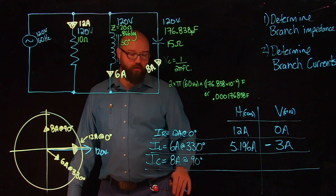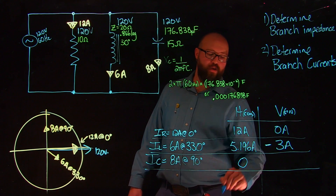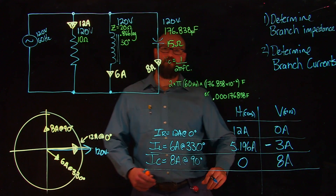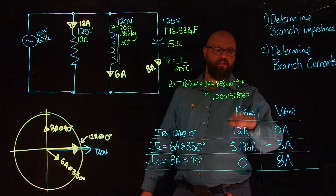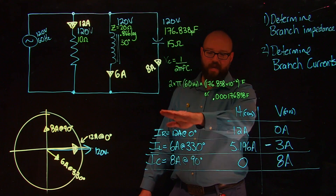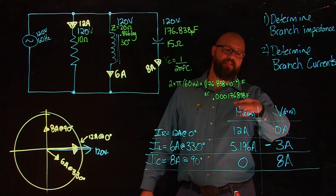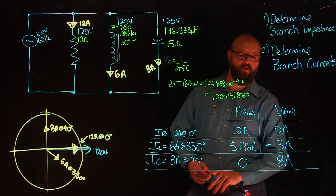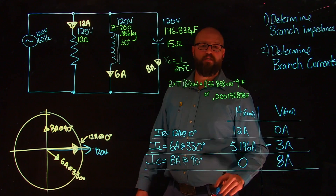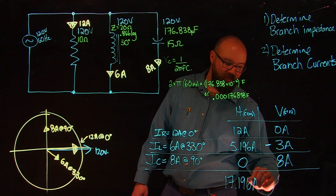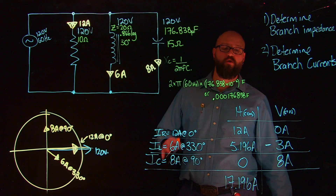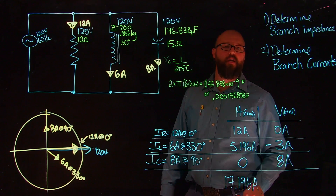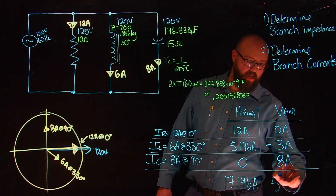For the capacitor: 8 amps × cos(90°) = 0 amps horizontal; 8 amps × sin(90°) = 8 amps vertical. Now in the HV chart, I can add all horizontal components together and all vertical components together. Adding horizontal: 12 + 5.196 = 17.196 amps total horizontal, which is our total in-phase current. Adding vertical — respecting polarities — negative 3 plus 8 gives a positive 5 amps total vertical.